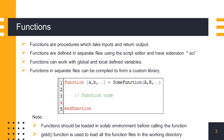We can also define new local variables inside the function. In Scilab, we define a function by using the keyword 'function' followed by an output arguments list, then the function name followed by an input arguments list. The 'endfunction' keyword marks the end of the function.